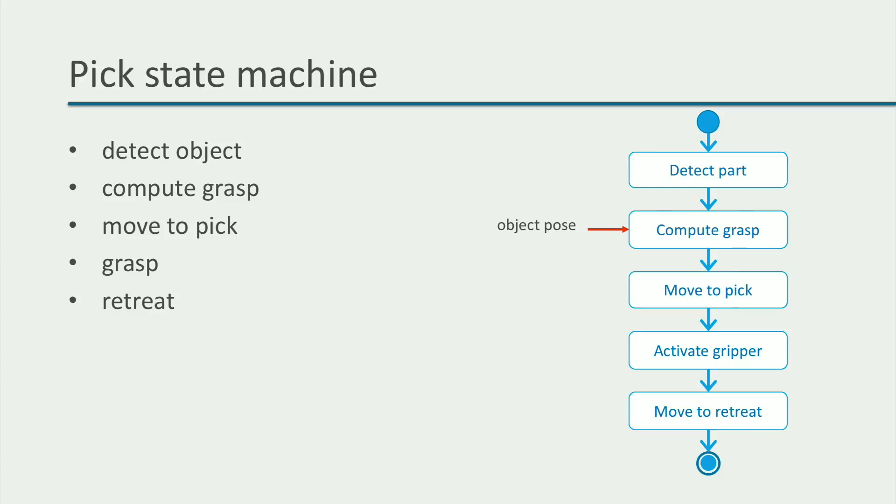For example, some of these states certainly need some input data to execute their actions. For example, to compute the grasp pose to the pick object, we certainly need the object pose. This pose should probably be the result of the previous state that detects the object.